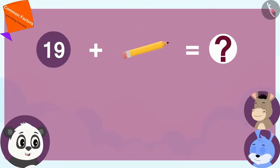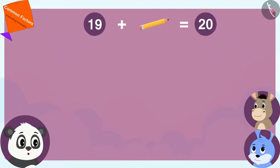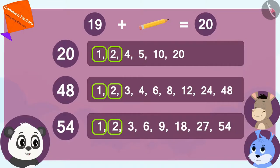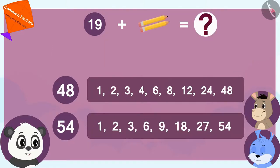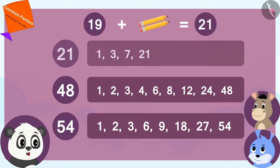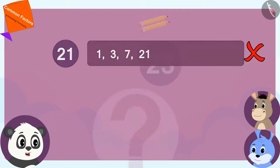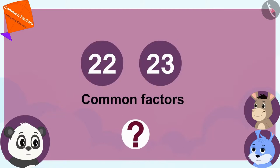If I add one more pencil to these 19 pencils, the total is 20 pencils. But 20, 48 and 54 do not have 6 as a common factor. Even now, we are not able to get 6 as a common factor. Will we get 6 as a common factor in 22 and 23? Golu asked Bunny and Bola.